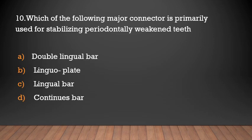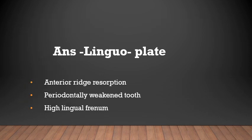Which of the following major connectors is primarily used for stabilizing periodontally weakened teeth? The answer is the lingual plate. It is indicated in cases of anterior ridge resorption, periodontally weakened teeth, and high lingual frenum cases.